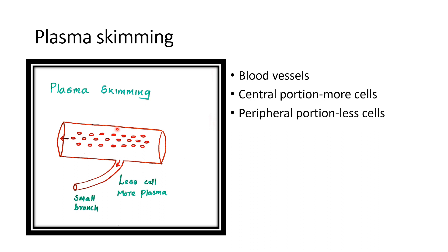The peripheral portion contains more amount of plasma and less amount of cells.